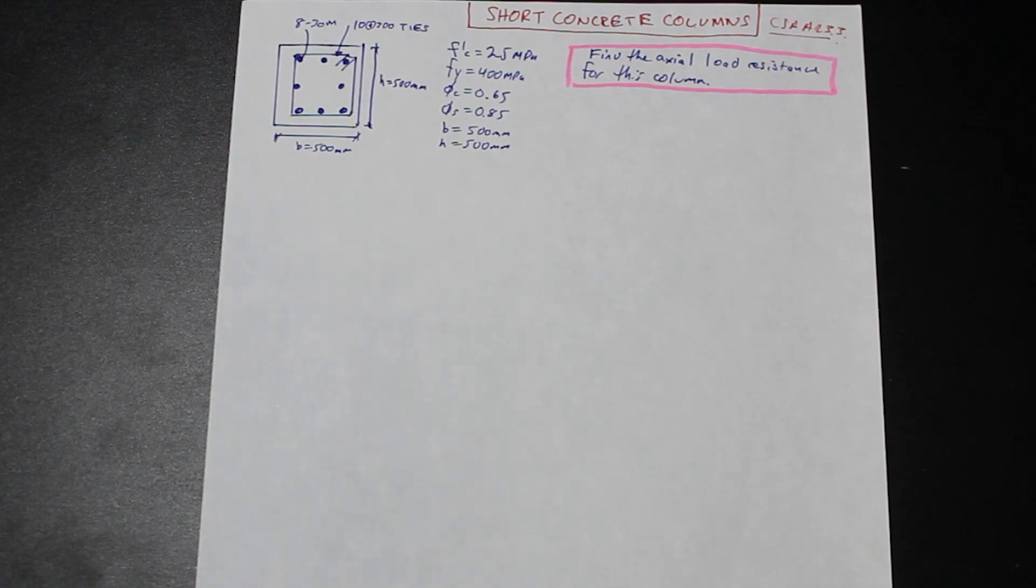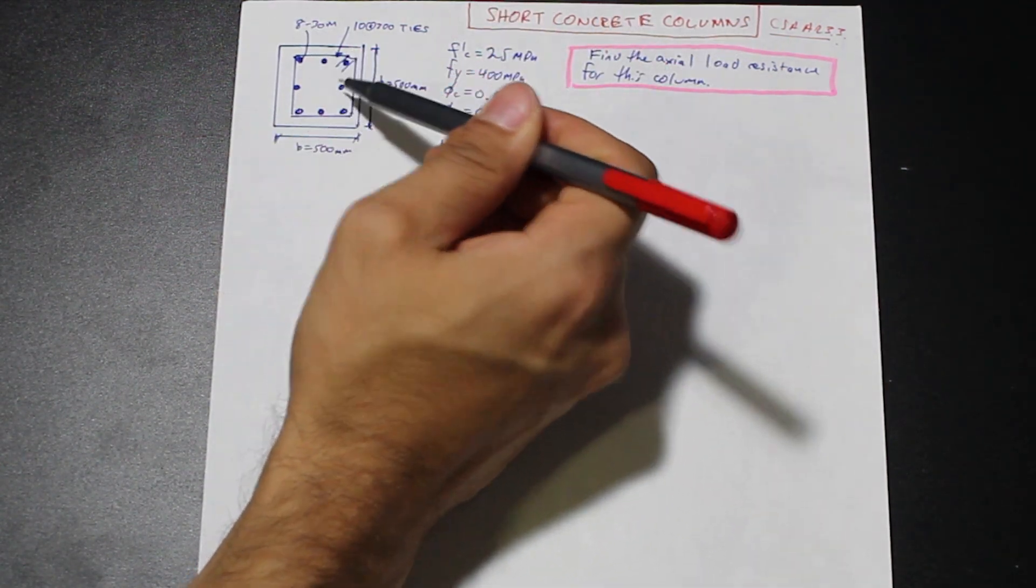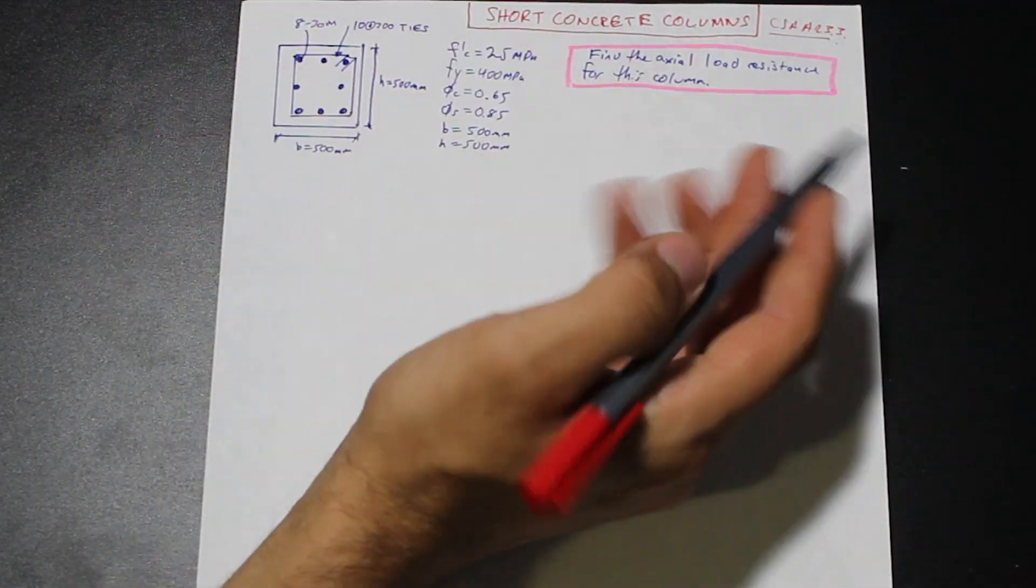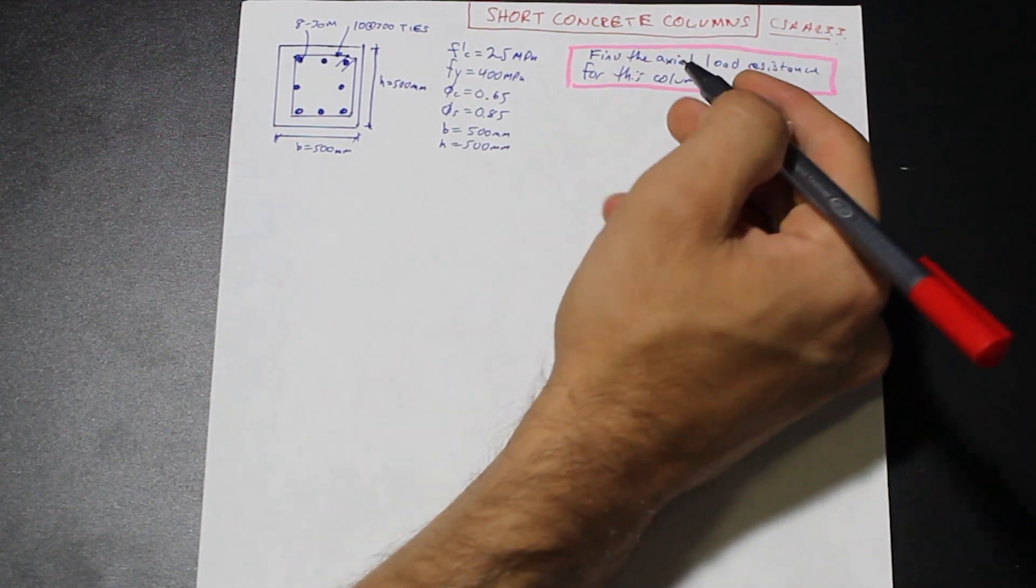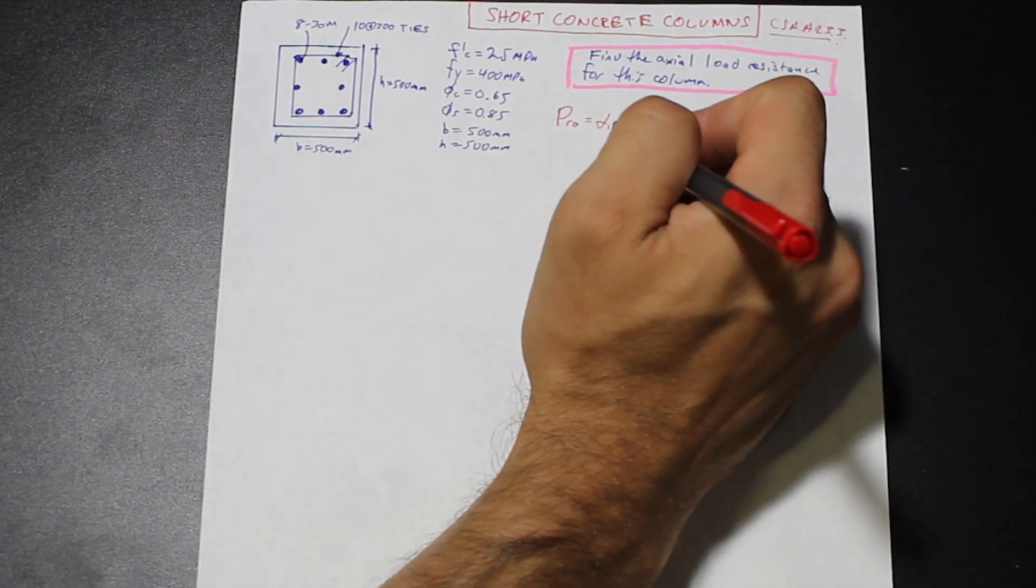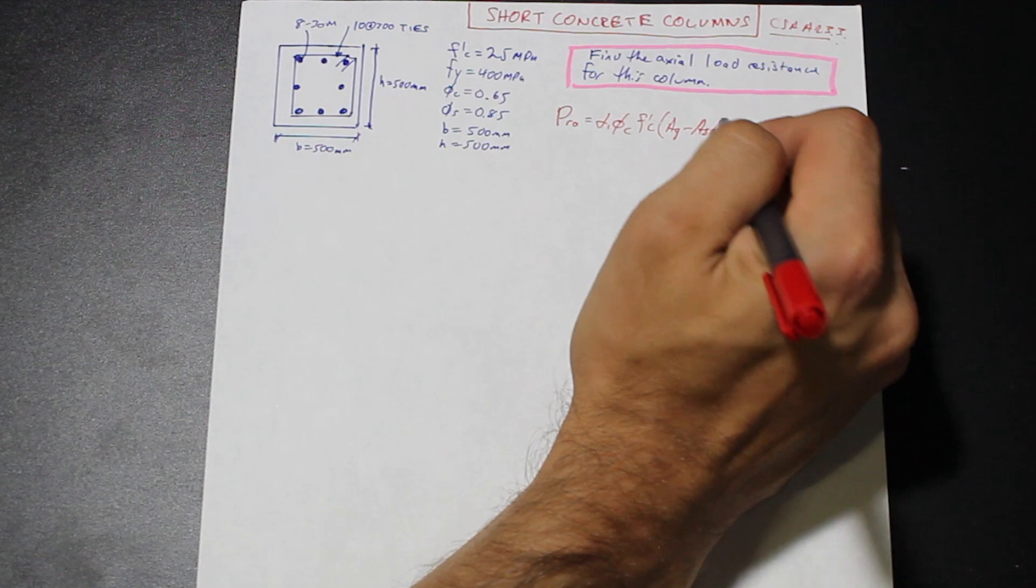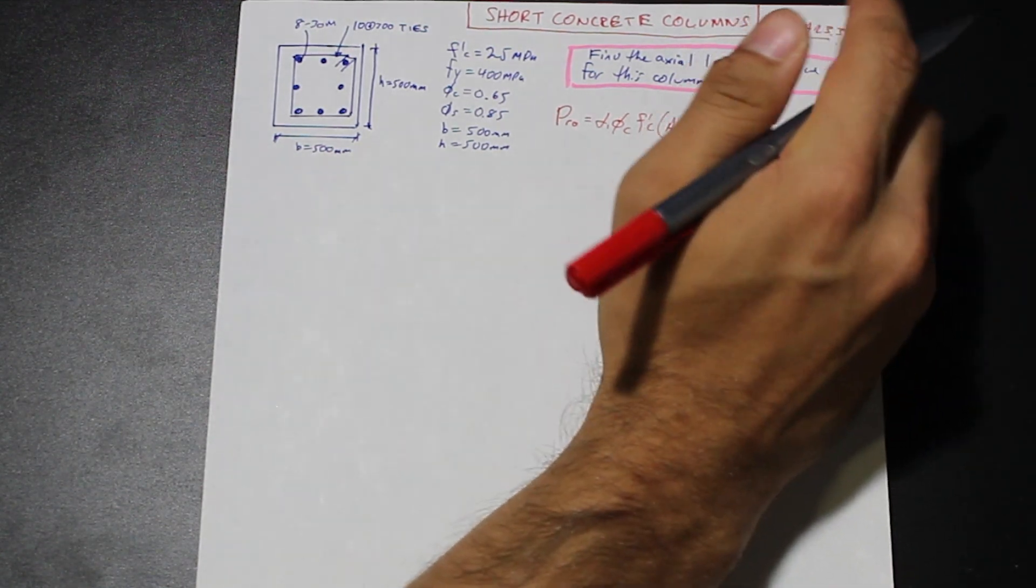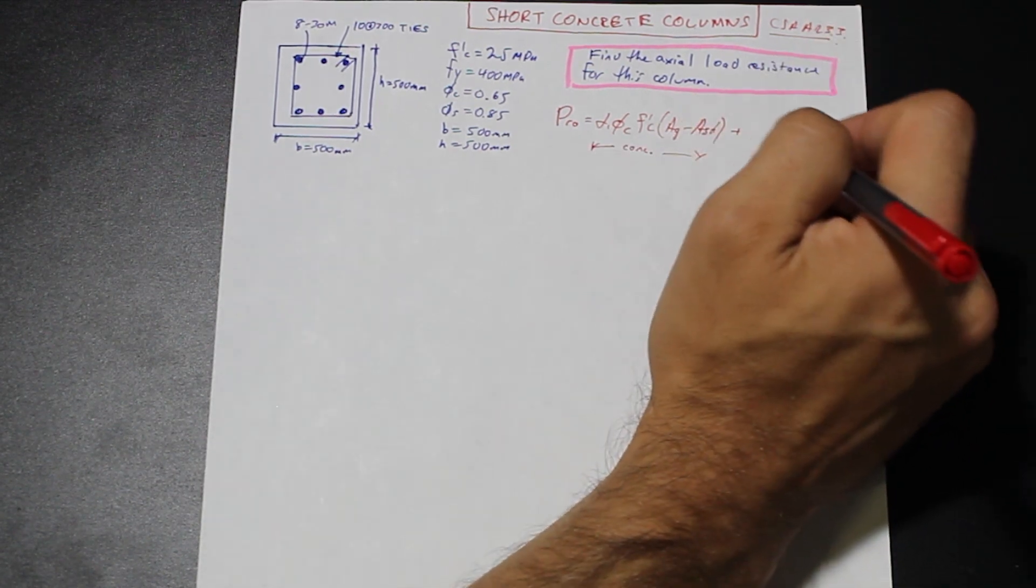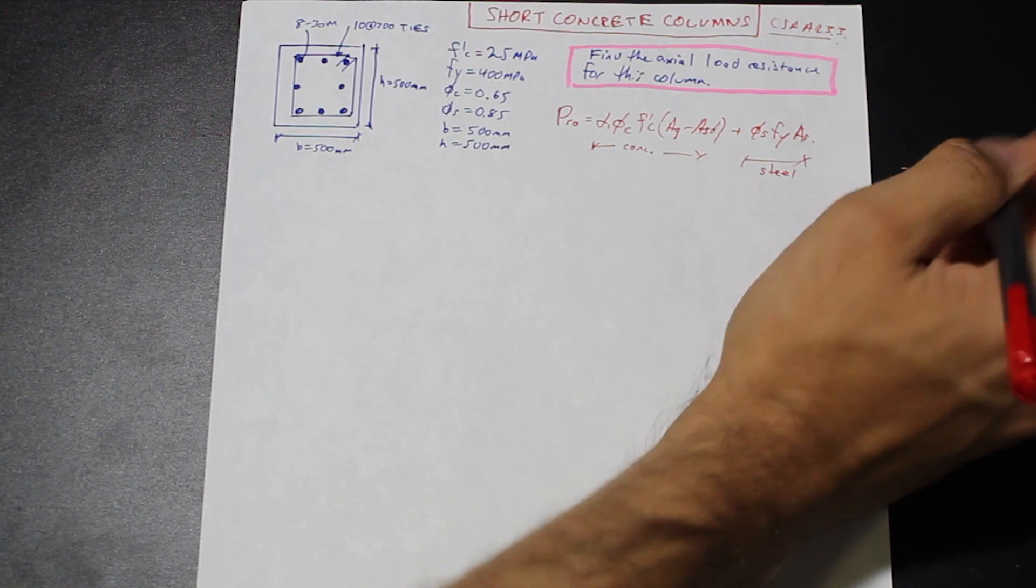So in the Canadian code, the factored axial load resistance of a reinforced column is the sum of the steel that's placed in the column and the cross-sectional concrete axial resistance. So it's the addition of the concrete resistance and the steel resistance. And that formula is given by PR0 equals alpha1 phi_c f'_c multiplied by the gross area minus the area of steel, plus the axial resistance of the steel in compression, which is phi_s f_y area of steel.